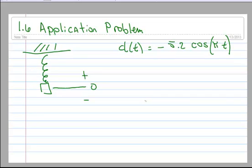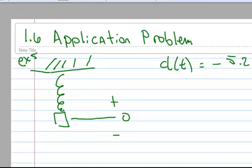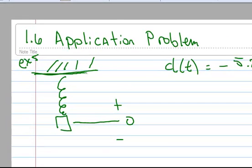Okay, here's an application problem. This is from your text, and it's example 5 in your text. So, here's a spring that's fastened. That's what these things mean up here. That means it's fastened and not going anywhere.